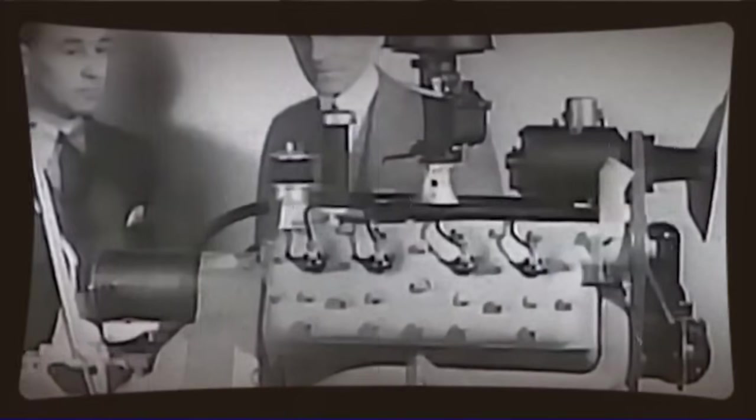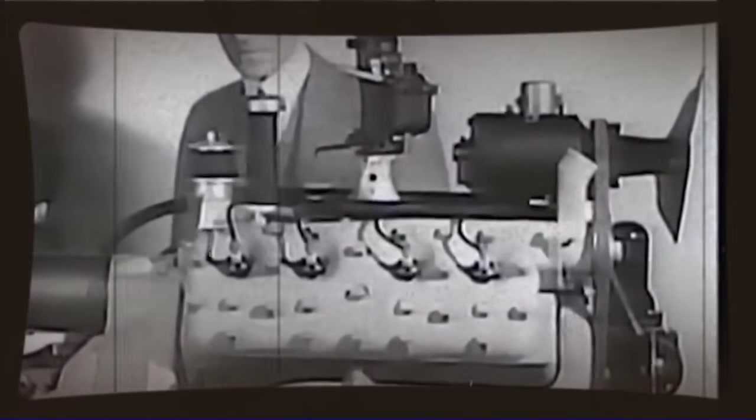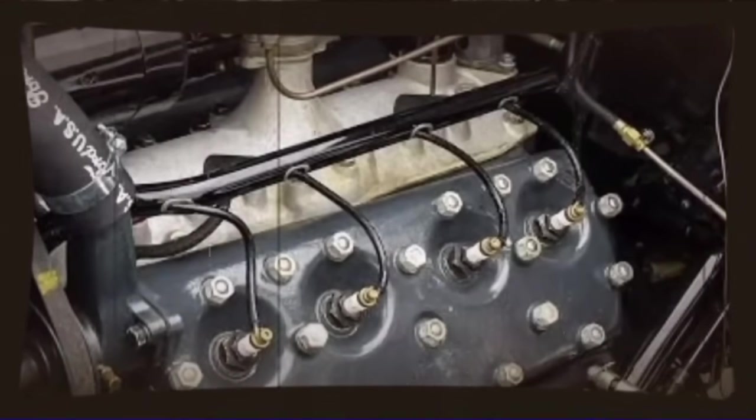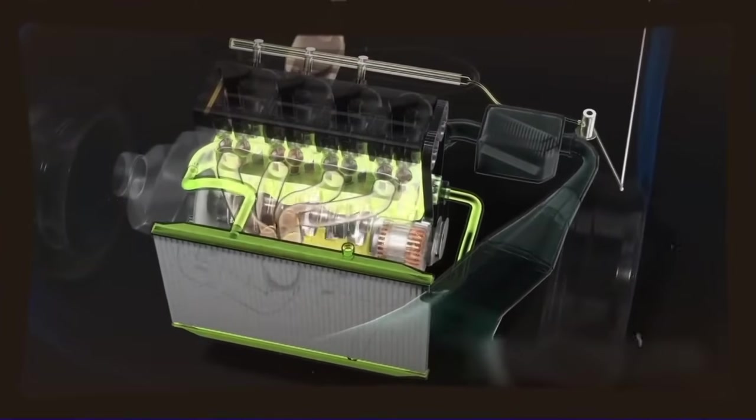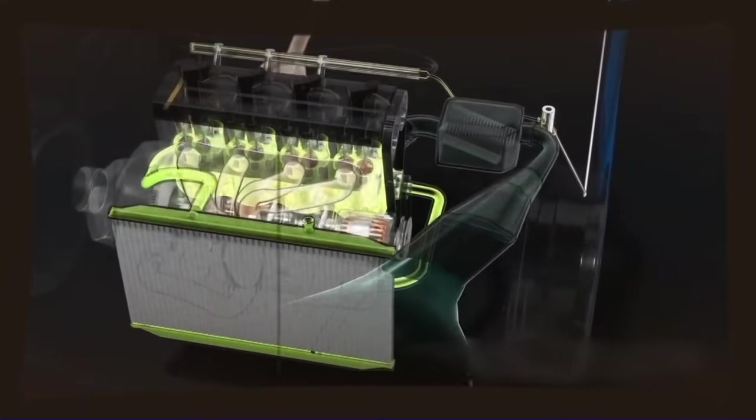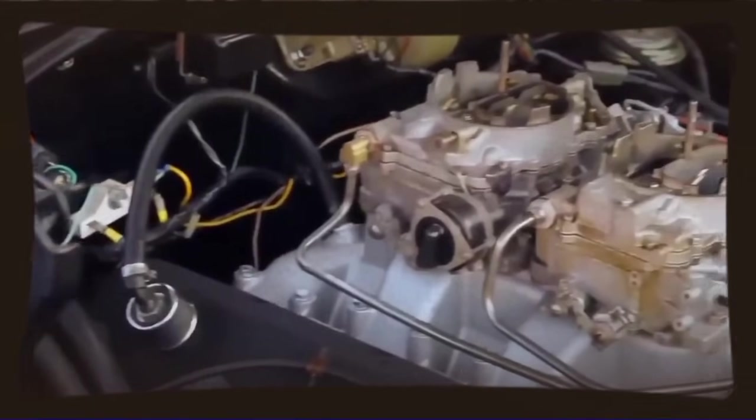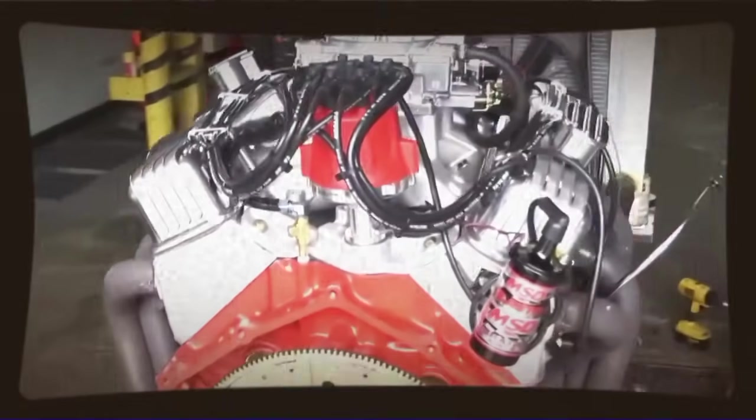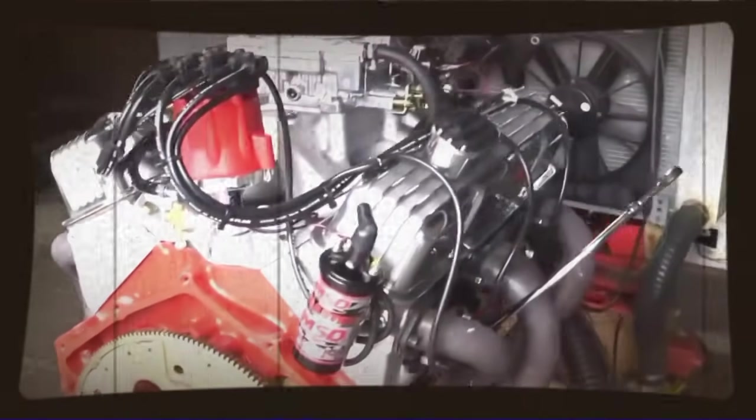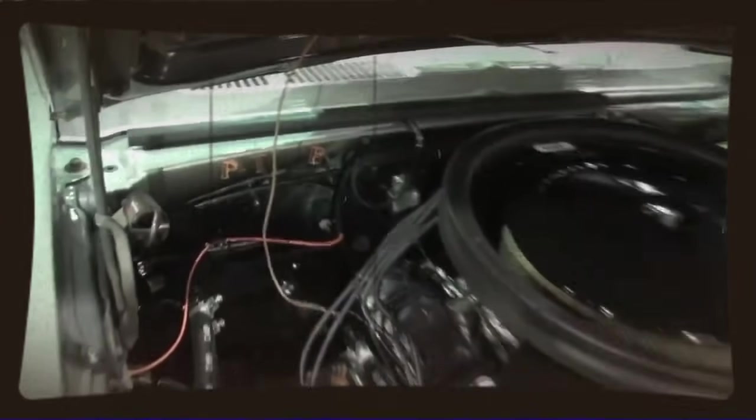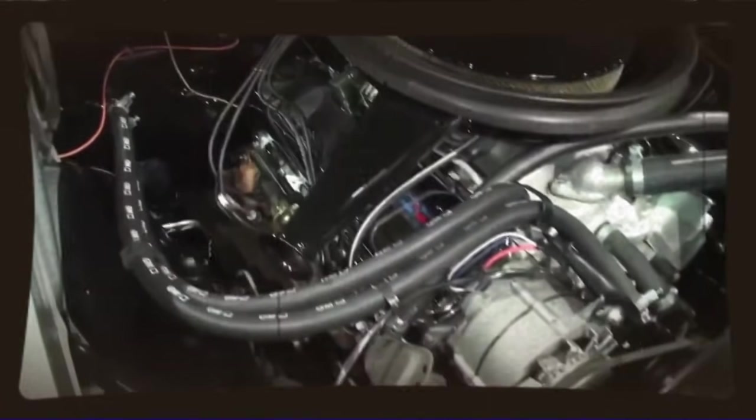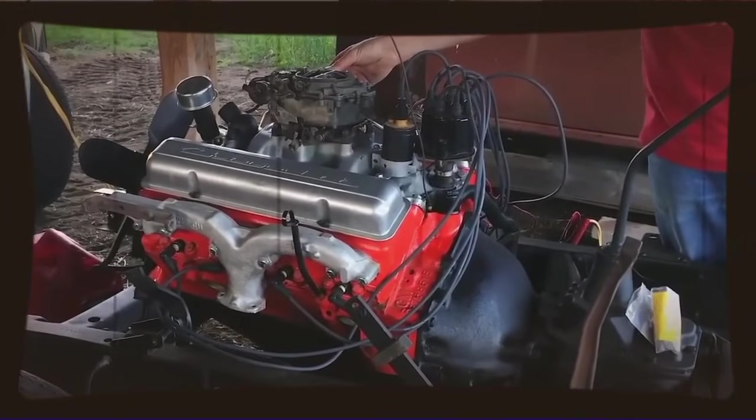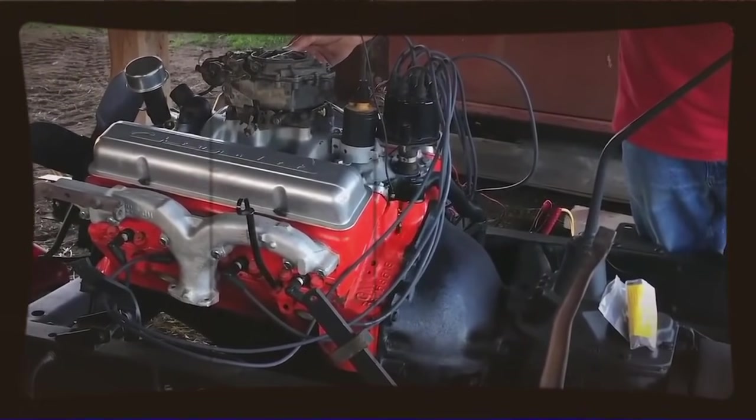One of Ranto's most innovative features was his approach to scavenging, which is the technical term for getting the exhaust gases out and the fresh charge in. This is the Achilles heel of most two-stroke engines. If you don't get the timing and flow just right, you end up with either residual exhaust gases contaminating your fresh charge, reducing power, or you end up with fresh fuel mixture escaping straight out the exhaust, killing your fuel economy and creating pollution. Ranto designed a sophisticated port arrangement that created a specific flow pattern through the cylinders, using the incoming fresh charge to help push out the exhaust gases while minimizing the amount of unburned fuel that escaped.